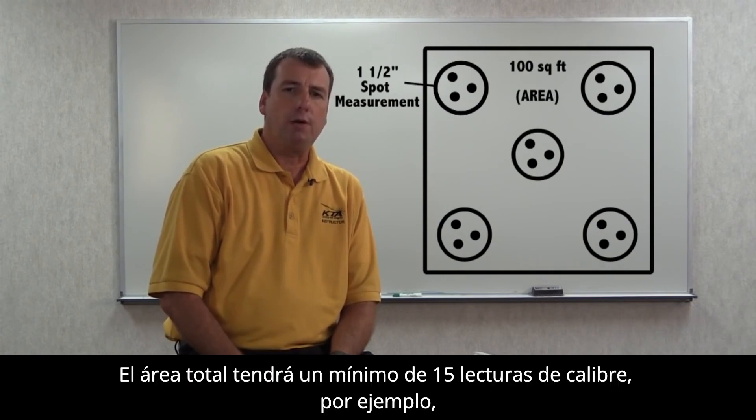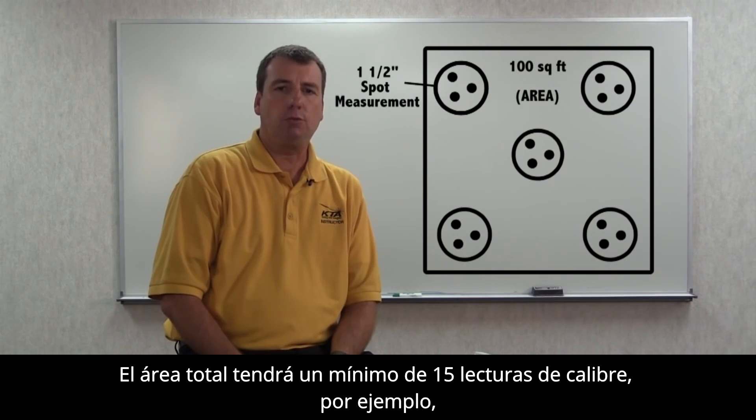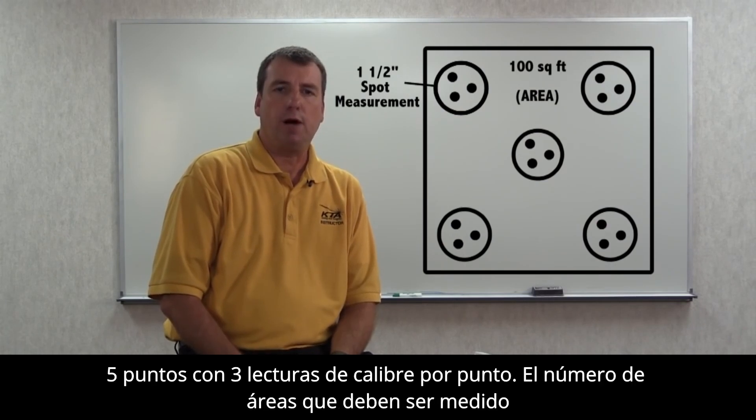The total area will have a minimum of 15 gauge readings — for example, five spots with three gauge readings per spot.